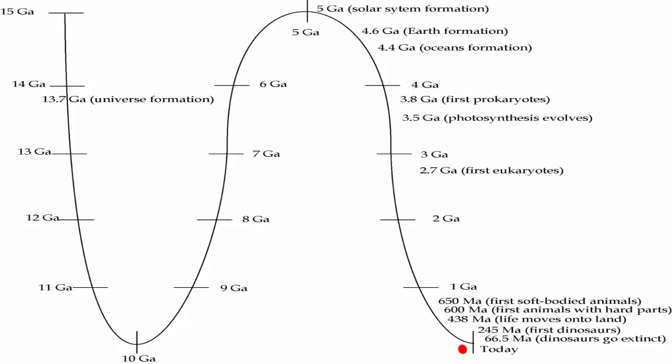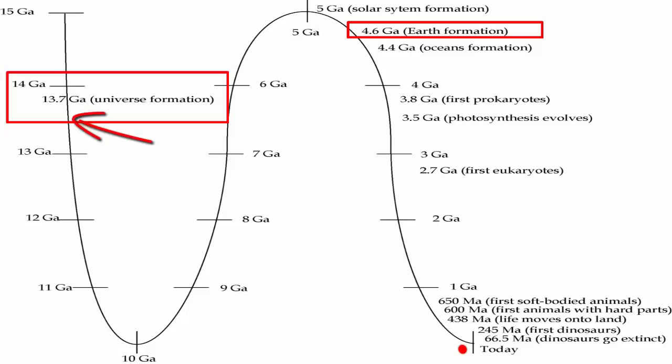This scaled timeline highlights key events that have happened since the formation of our universe 13.7 billion years ago. Note the 4.6 billion year age of Earth's formation means it happened a long time after the universe formed. The dot here at the bottom represents today.